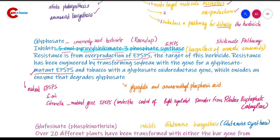Glyphosate can also be degraded by glyphosate oxidoreductase, known as GOX, which breaks down glyphosate into glyoxylate and aminomethylphosphonic acid. In this third strategy, we isolate the GOX gene from Achromobacter species and express it in a transgenic plant to inactivate the glyphosate.